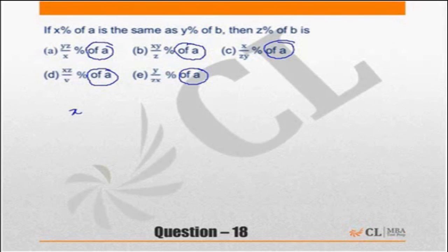x percent of A is nothing but xA upon 100 is equal to y percent of B. y percent of B will be yB upon 100.